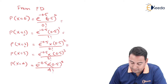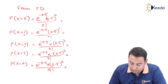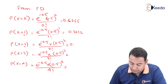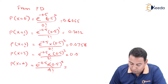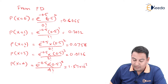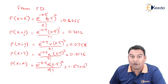If you put all of these in a calculator, you will get the answers: 0.6065 for x=0, 0.3032 for x=1, 0.0758 for x=2, 0.0126 for x=3, and 1.57 into 10 raised to minus 3 for x=4. These are the values of probability that we obtained.